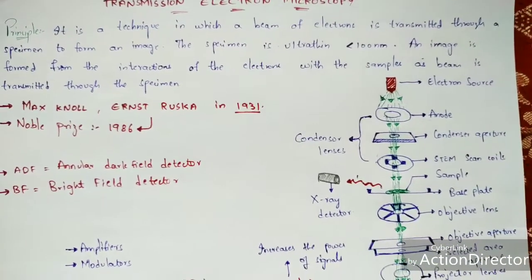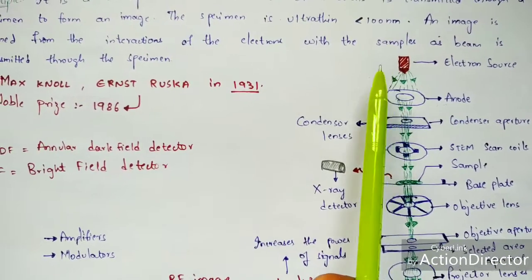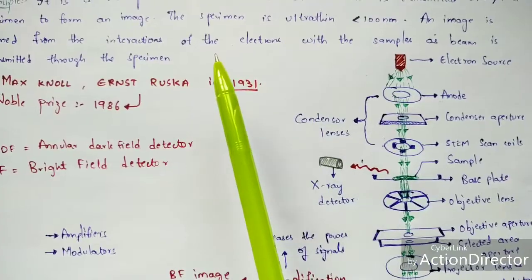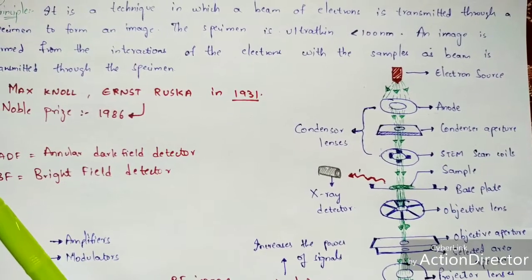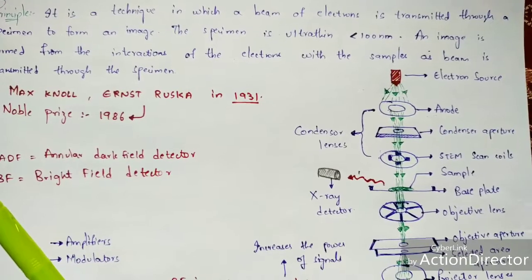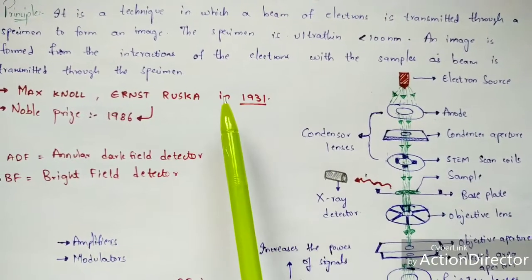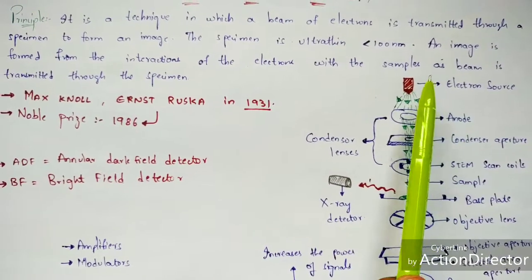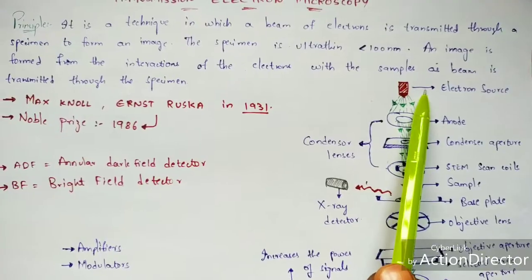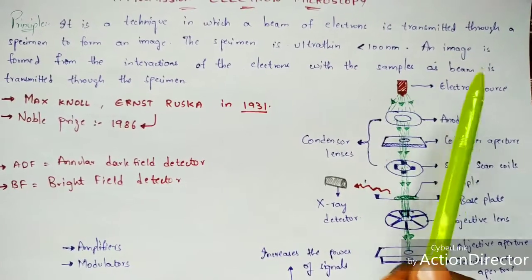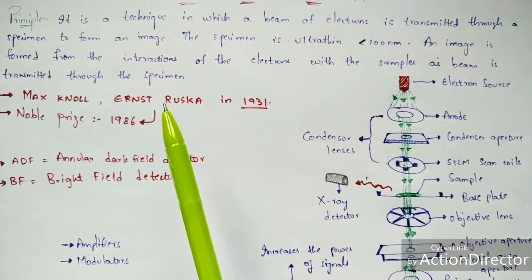Now let us see the mechanism of how transmission electron microscopy works. In both scanning electron microscopy and transmission electron microscopy, an electron source is used rather than a light source. Light source involves emission of photons, whereas electricity involves emission of electrons. That emission of electrons is produced by the electron gun, where the electron source acts as the electron gun and releases electrons.